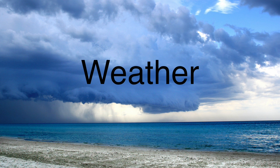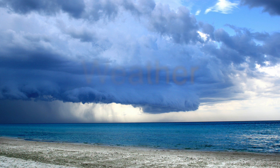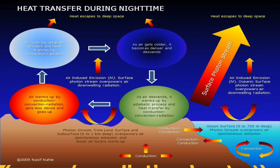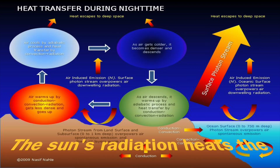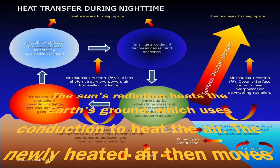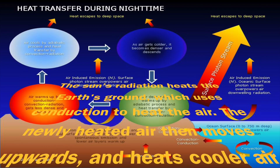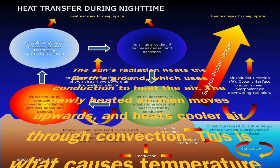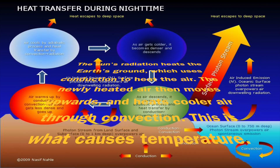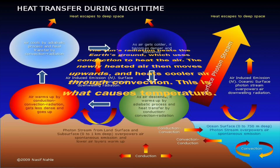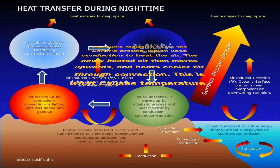The three methods of heat transfer also affect weather. The sun's radiation heats the earth's ground, which uses conduction to heat the air. The newly heated air then moves upwards and heats cooler air through convection. This is what causes temperature.